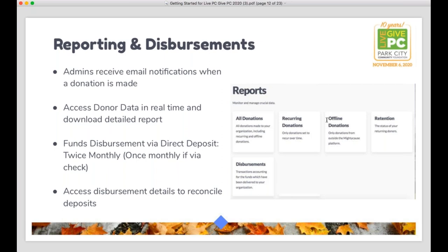Moving to the Reports tab: anyone who is an administrator for your organization will automatically receive an email notification whenever a donation is made — that's the standard default. If you have the wonderful problem of getting too many donations on Live PC, Give PC and don't want those email notifications, you can go into your user profile on the platform and change your email settings. At any time, any admin can log in and access all donor data in real time. On screen you'll see a quick overview of your donations report, but you can always download as a CSV with all relevant information.